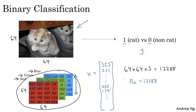So in binary classification, our goal is to learn a classifier that can input an image represented by its feature vector x, and predict whether the corresponding label y is 1 or 0. That is whether this is a cat image or a non-cat image.